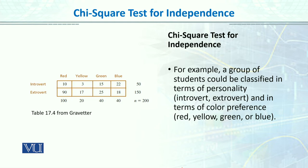We have cells in the matrix. There are two levels of personality and four levels for the color variable, and the cells contain our frequencies. This is the kind of data we are working with.